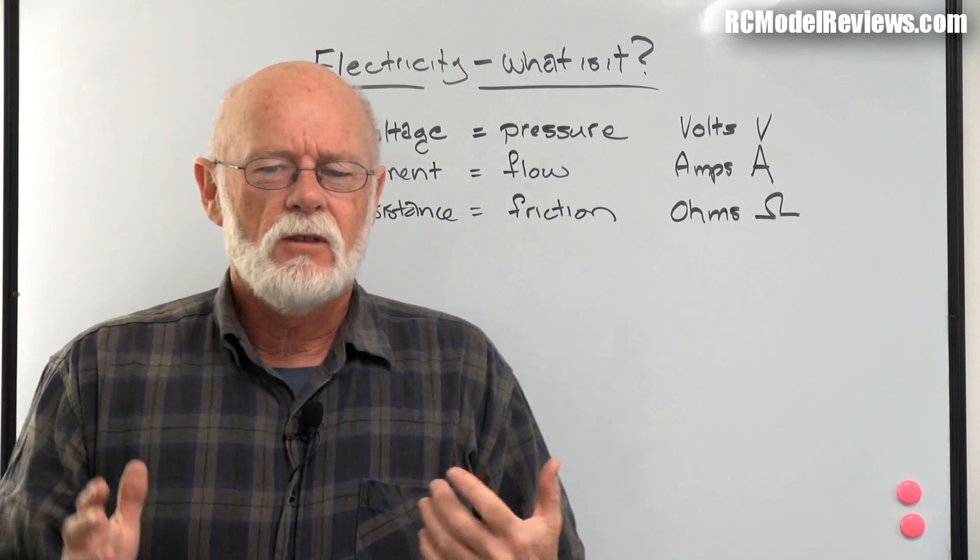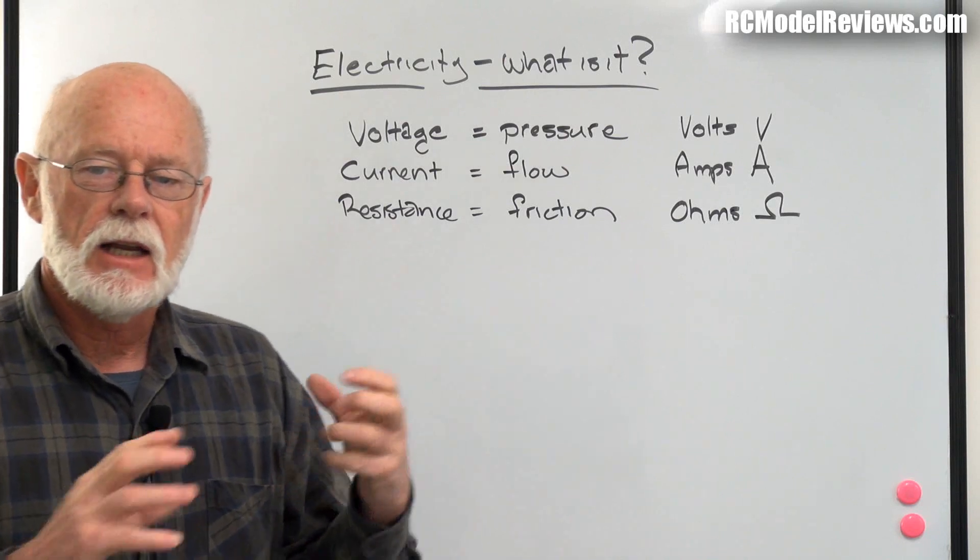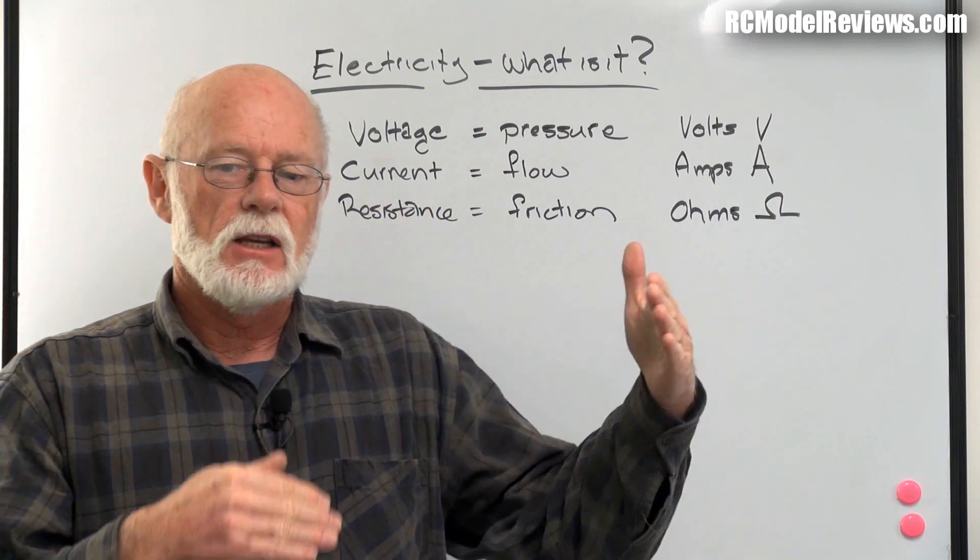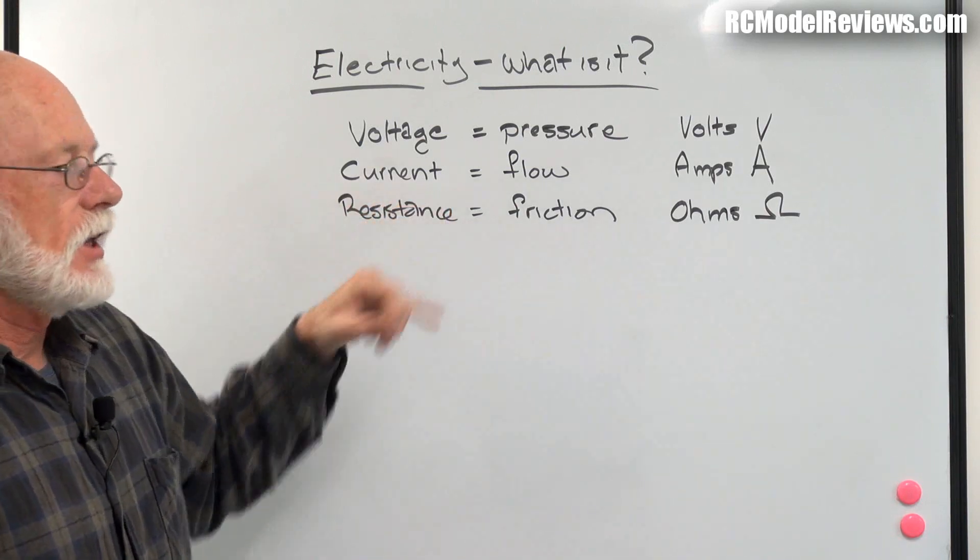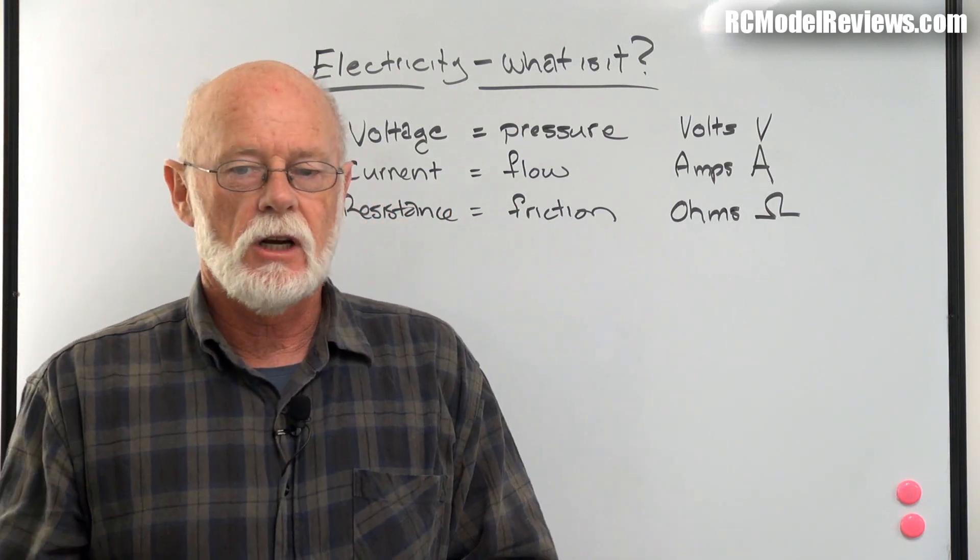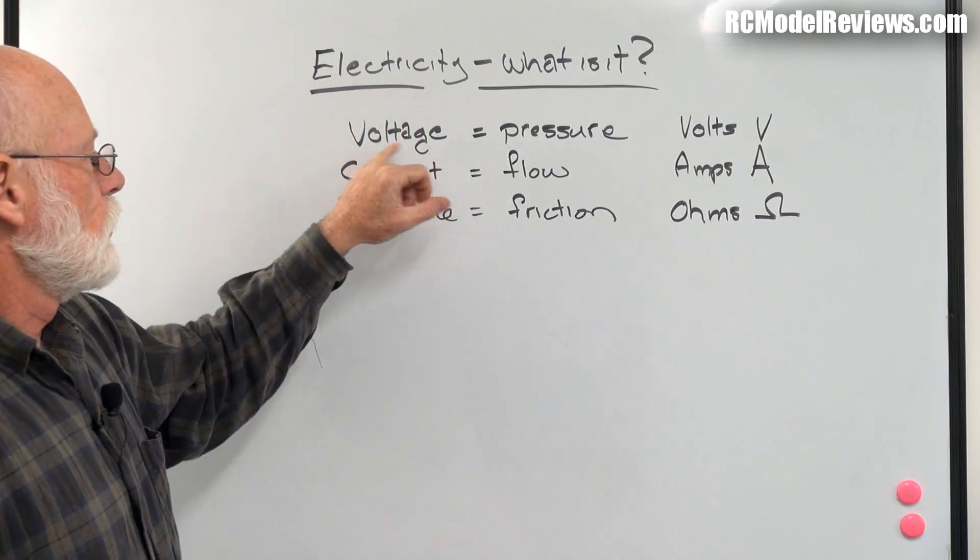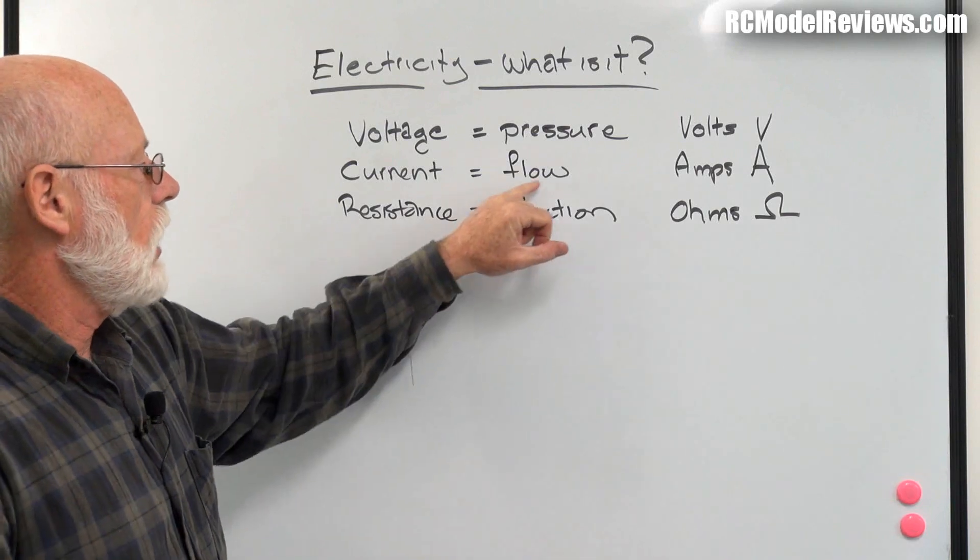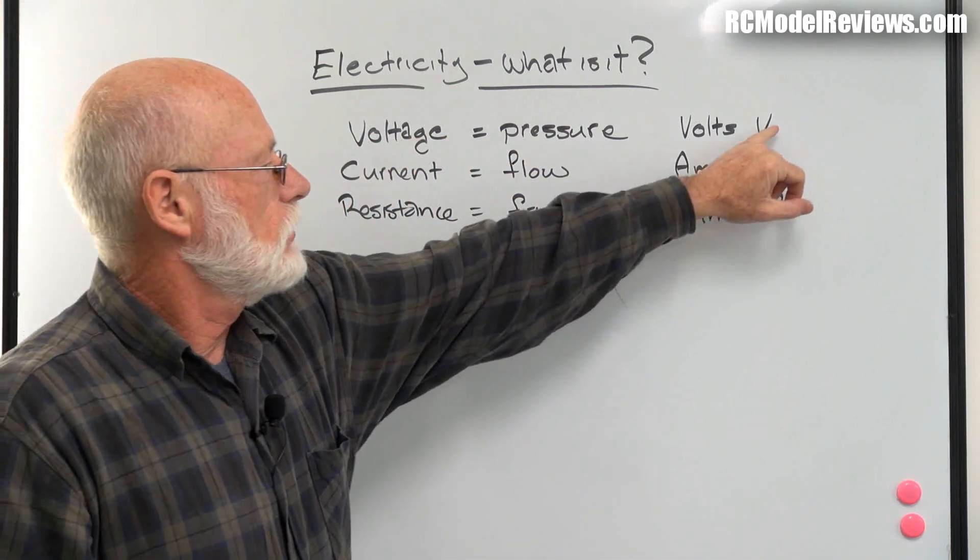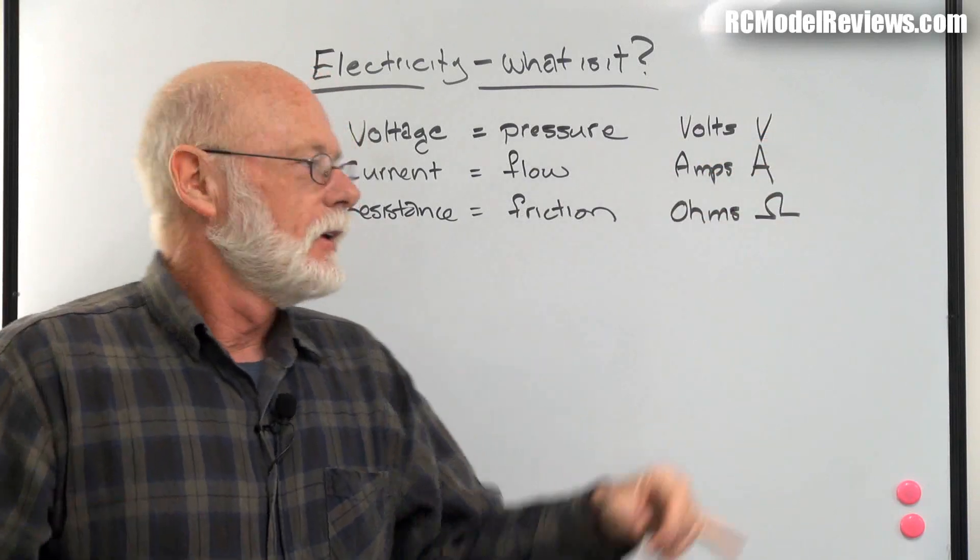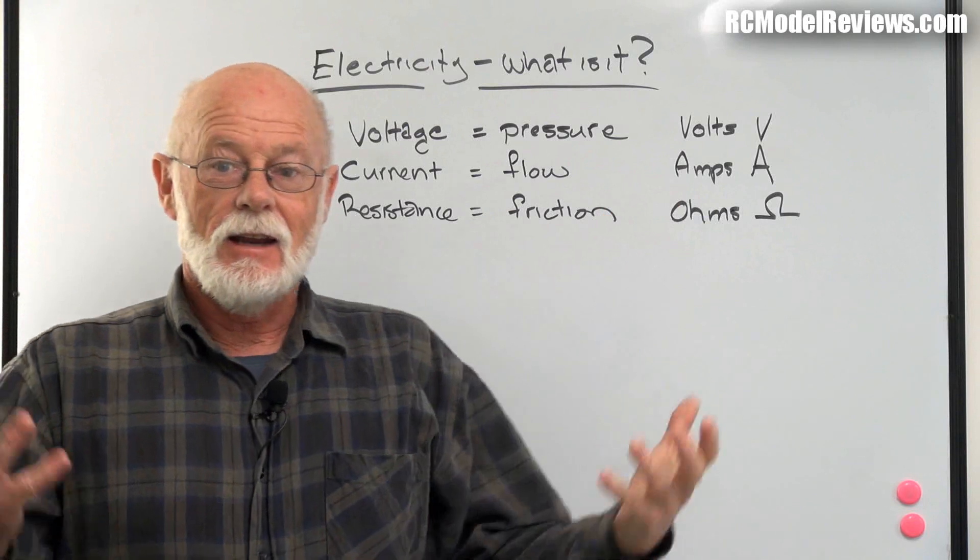Once we've got movement, we need to measure how much electricity is flowing - how many electrons are passing a given spot. That's where current comes in. The current, like the current of a river or stream, is the flow of electricity. We measure that in amps. The symbol for volts is V, and the symbol for amperes is A.